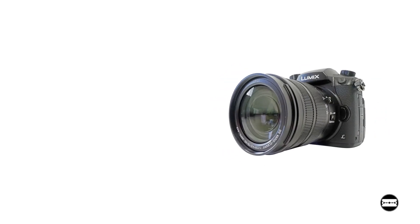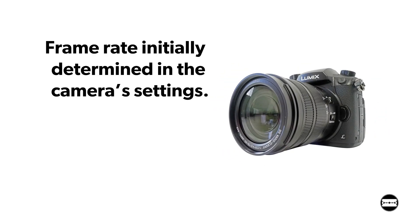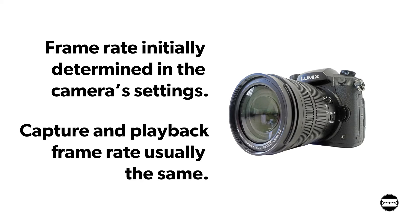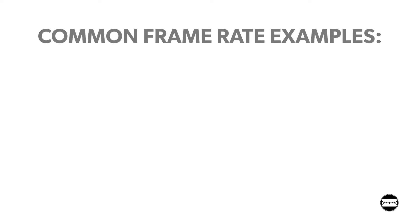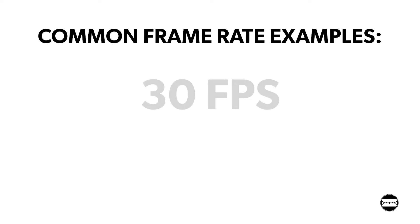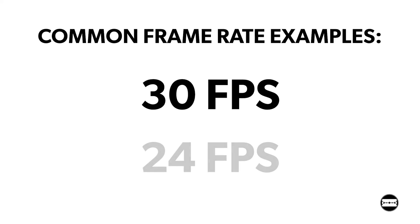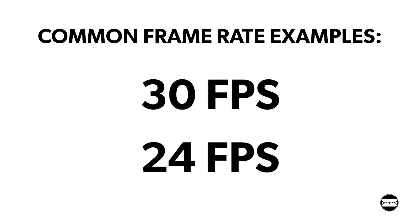The capture or record frame rate is determined by the settings of the camera. In most cases, the playback frame rate will be the same as the capture frame rate. Two common frame rates seen in the US are 30 frames per second and 24 frames per second.